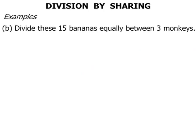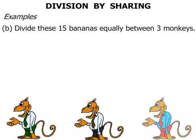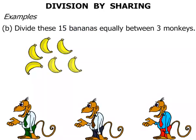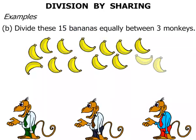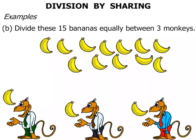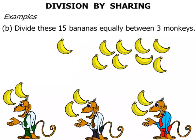Divide these 15 bananas equally between 3 monkeys. So there are our 1, 2, 3 monkeys. We've got 15 bananas — 2, 4, 6, 8, 10, 12, 14, and 1 more makes 15. Again, we just keep on moving the bananas around — taking turns to give each monkey a banana and then moving on.